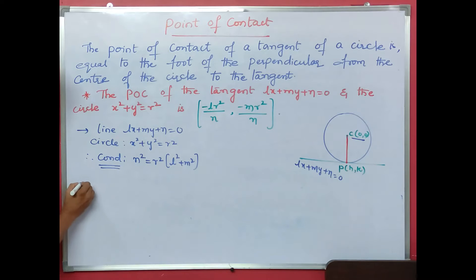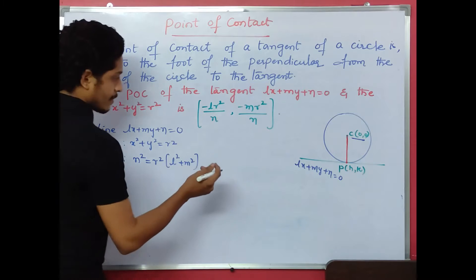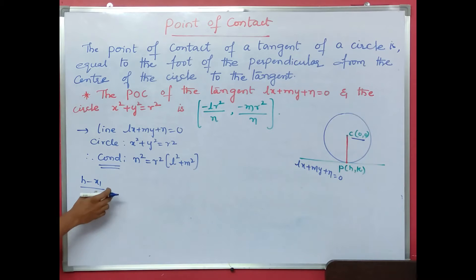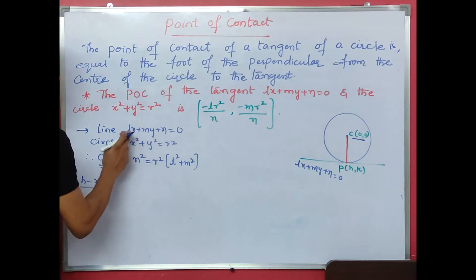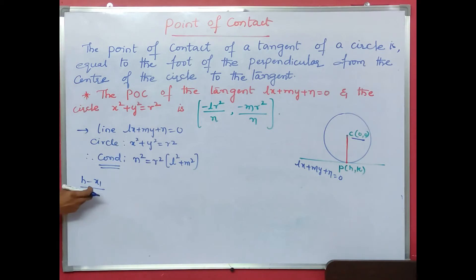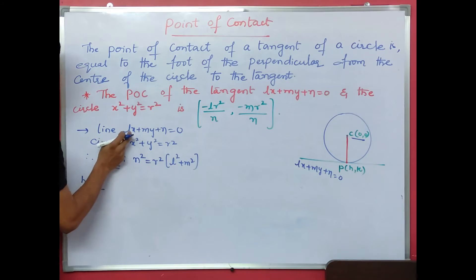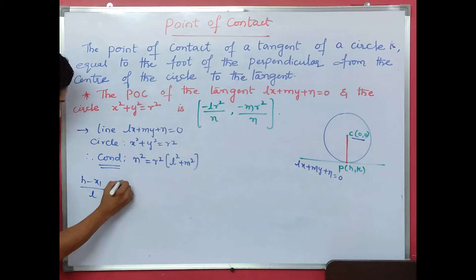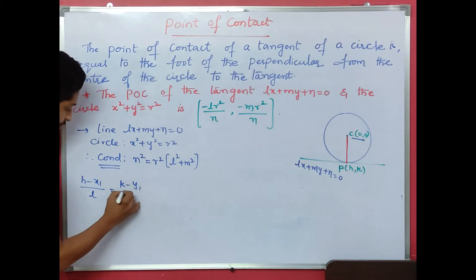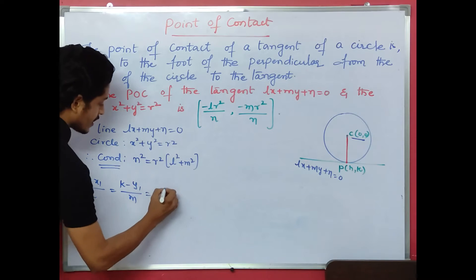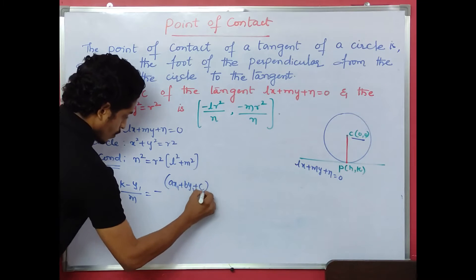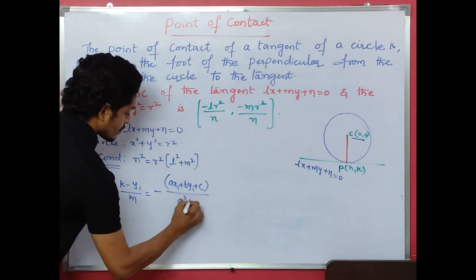For the point of contact formula, we arrange it. Here the line is lx plus my plus n equals to 0 compared with ax plus by plus c equals to 0, so a equals l, b equals m, c equals n. And x1, y1 is the center.